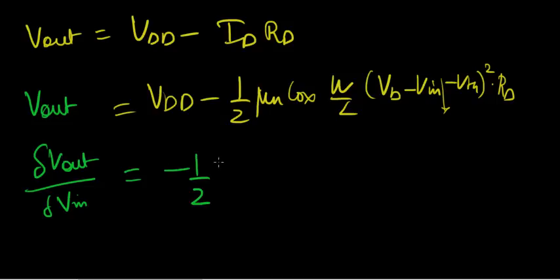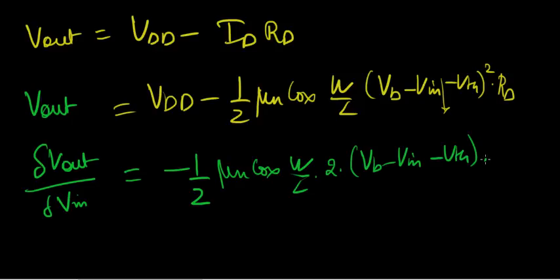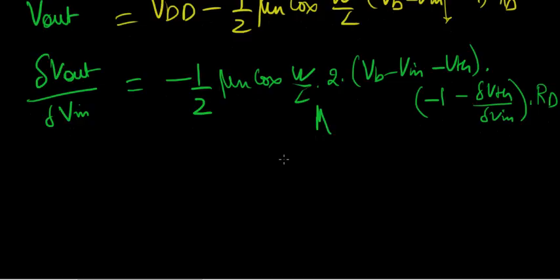This is what you should get. Mu n Cox, W over L, and the 2 is brought out here. We have Vb minus Vin minus Vth times, now Vb is a constant, so that can go. I'm going to write that multiplication sign here. Vb is constant, it's gone. Minus Vin with respect to Vin is just minus 1, and minus delta Vth over delta Vin times Rd. Now this is a huge thing. Generally, threshold voltage, see, what is Vin basically here?